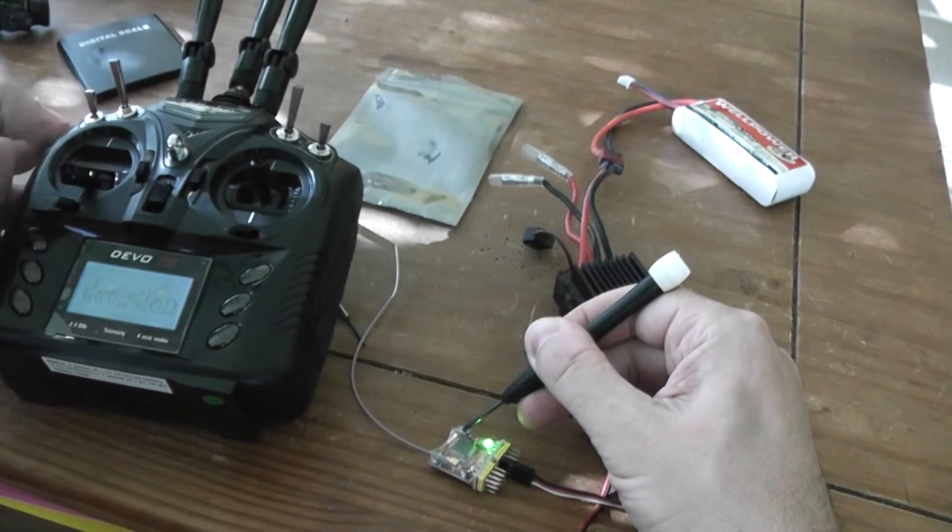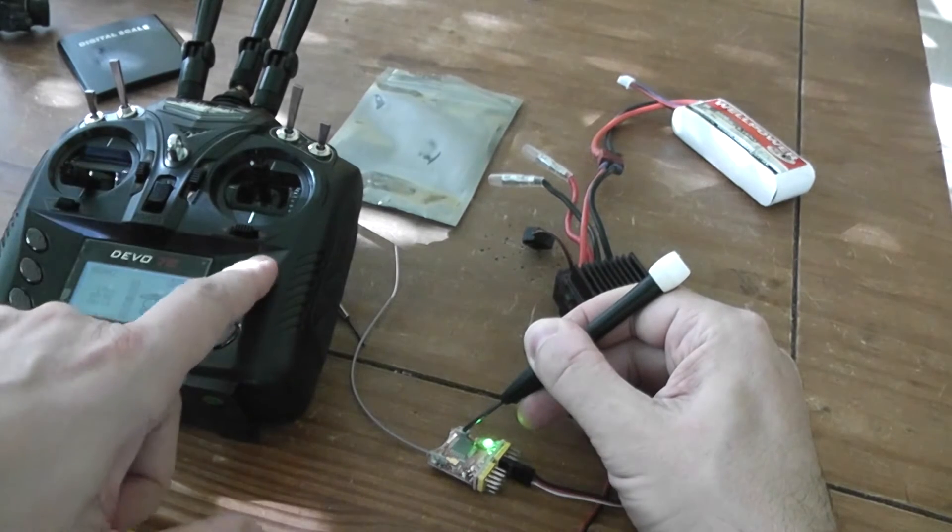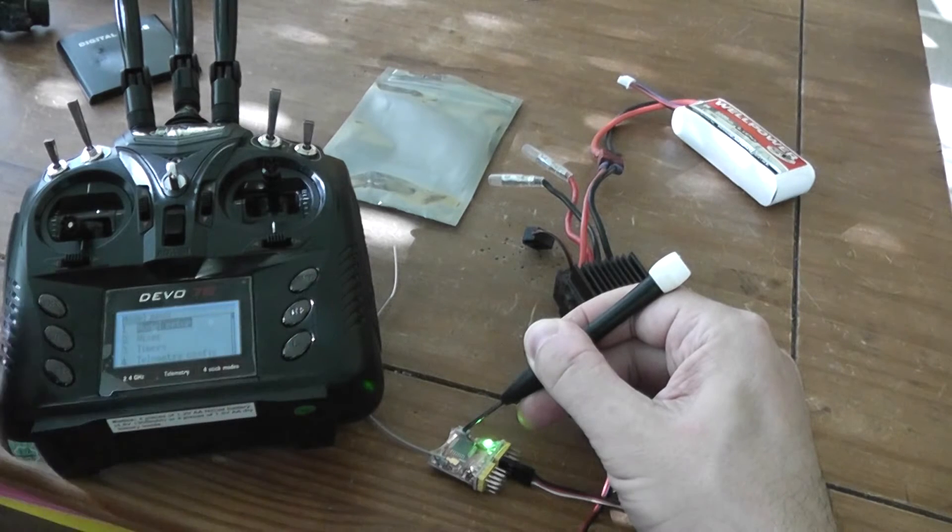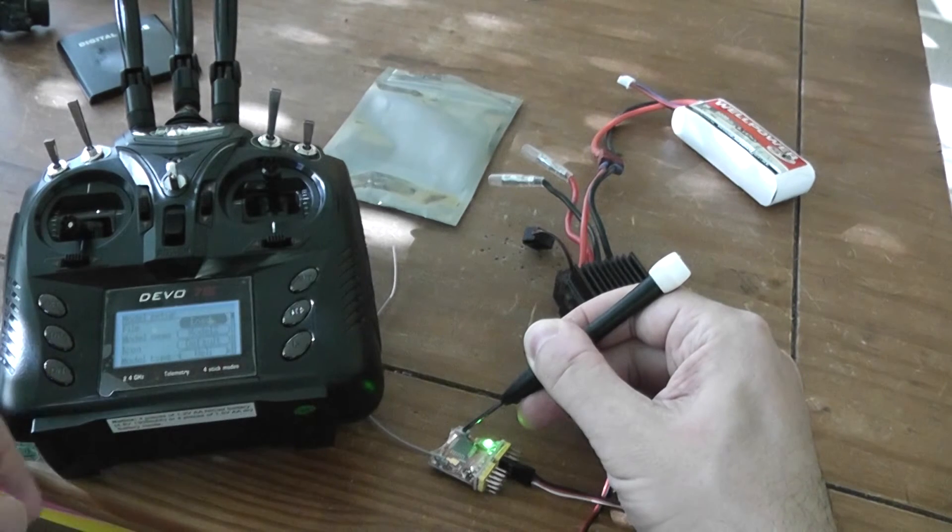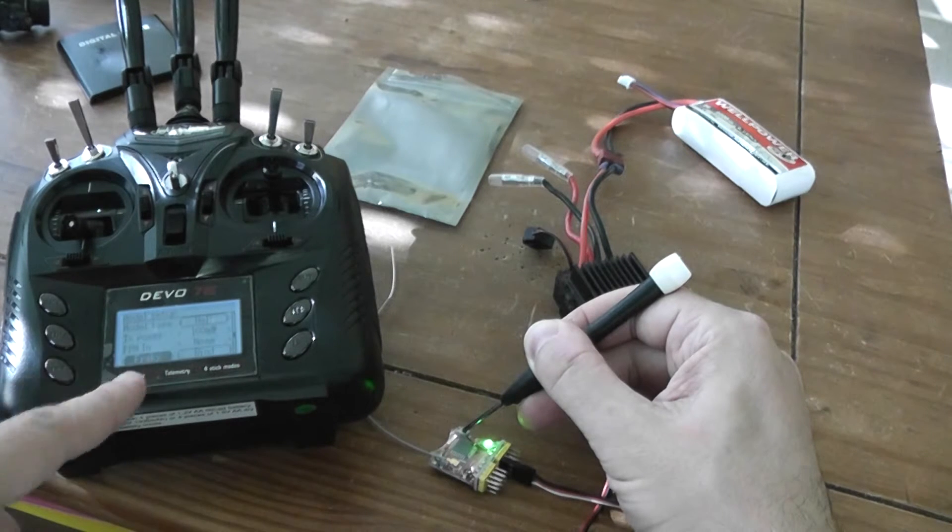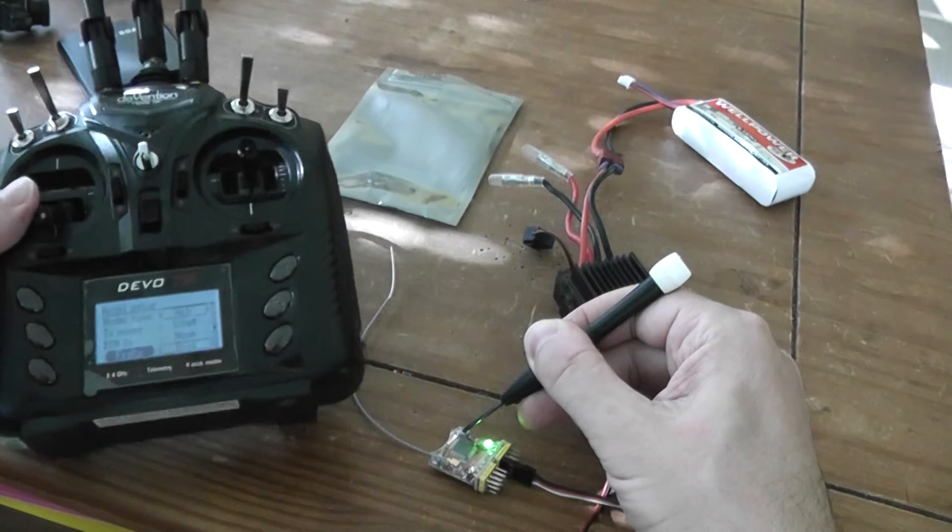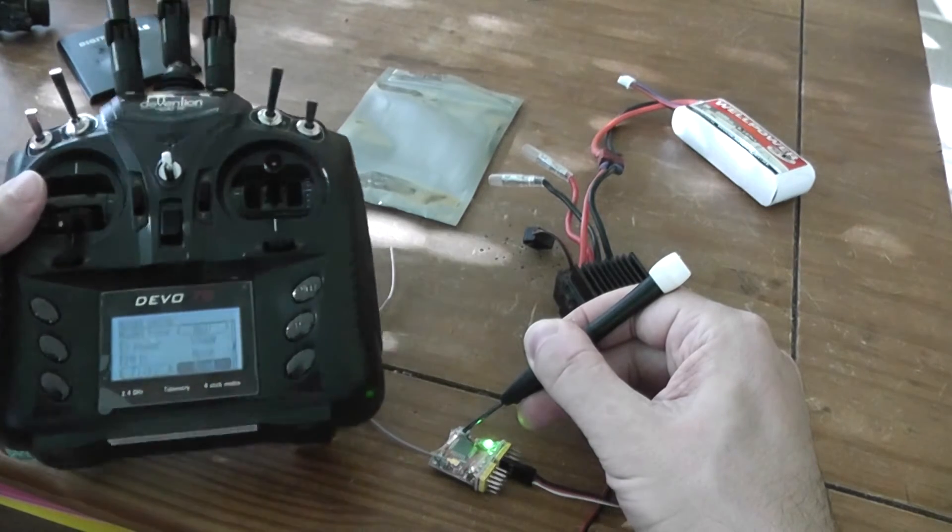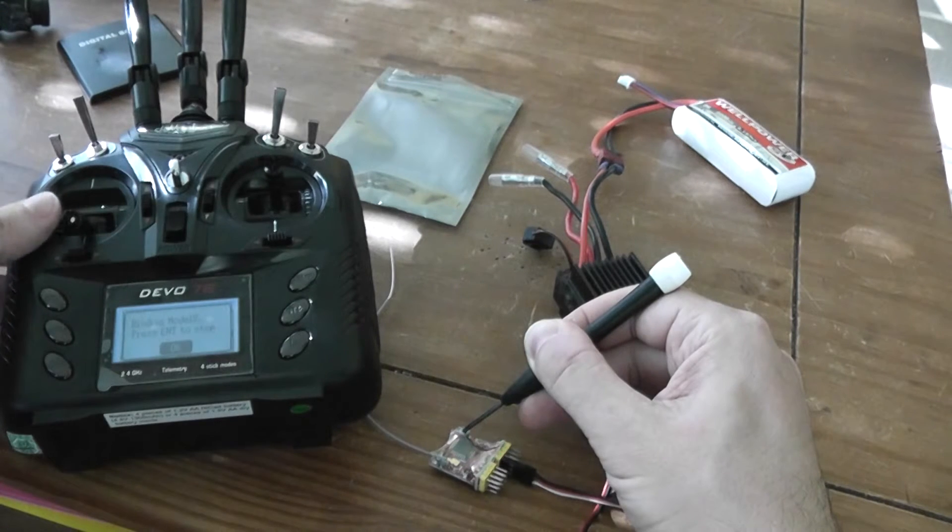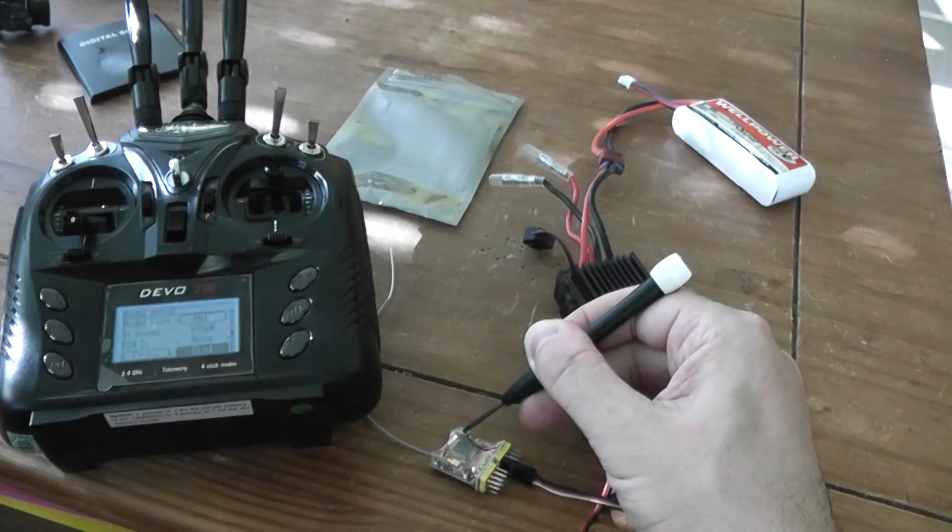Start your controller, here a Devo. I hope you can see. Go to model menu, model setup, and go to a model with FrSky. This is a D8 protocol of FrSky. And go to bind button, and you press enter. And as you can see, now it's flashing, means it's bound.